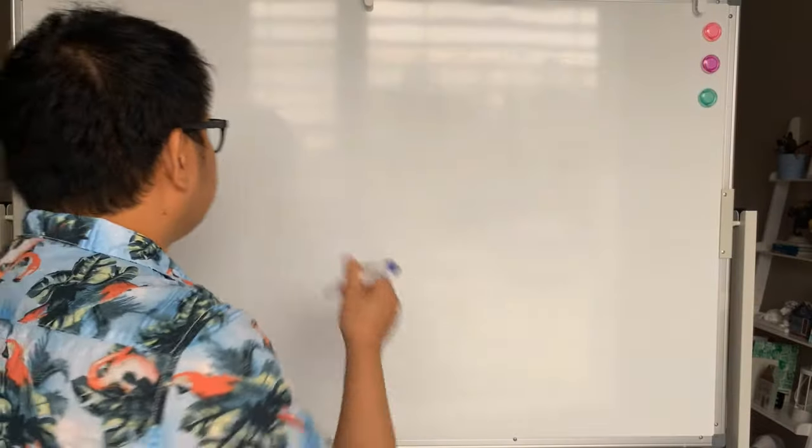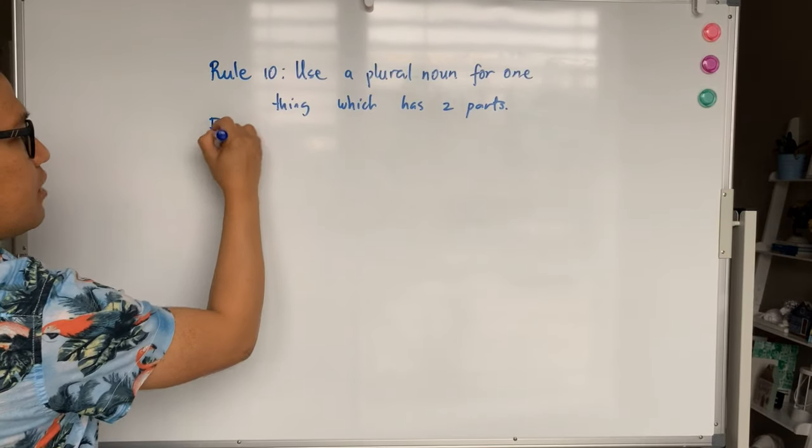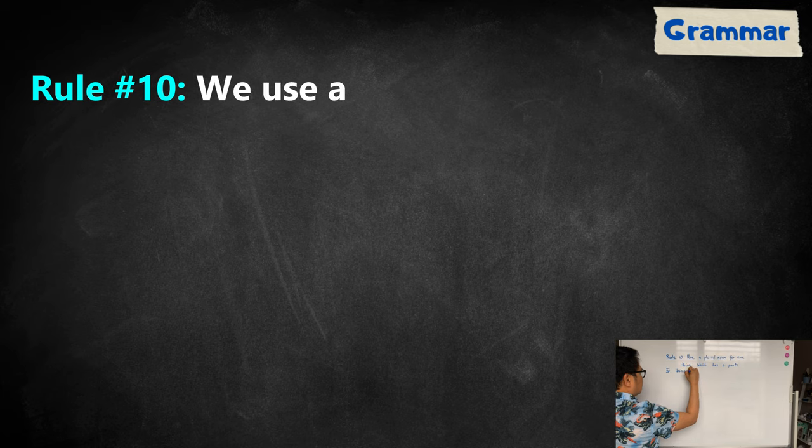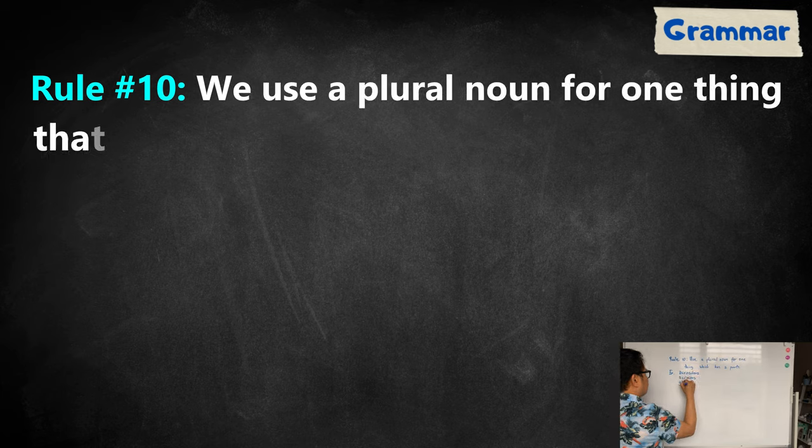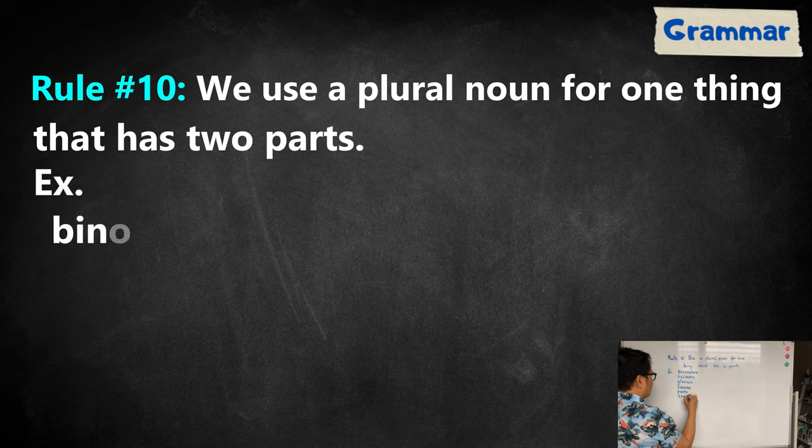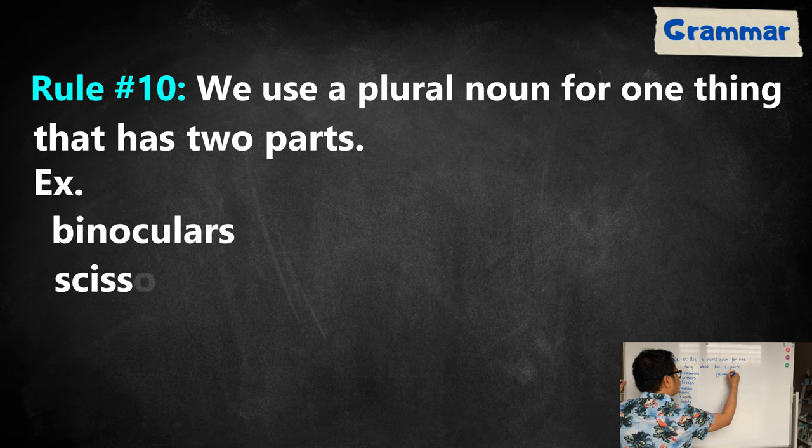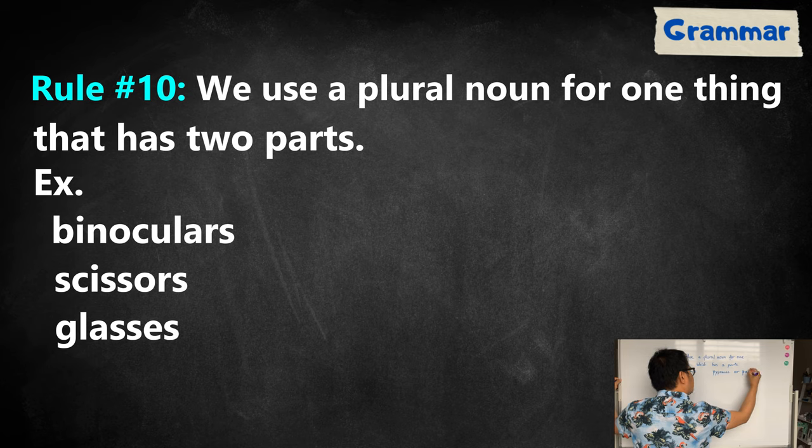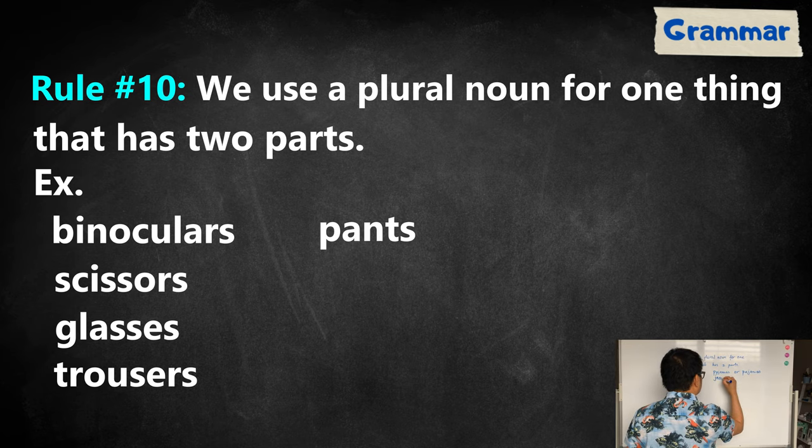Rule number ten, we use a plural noun for one thing which has two parts. For example, binoculars, scissors, glasses, trousers, pants, shorts, tights, pajamas, and jeans.